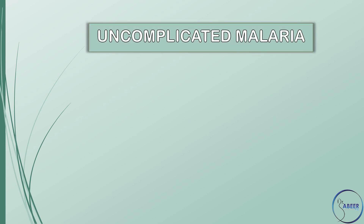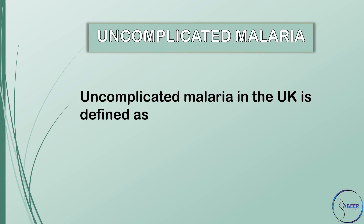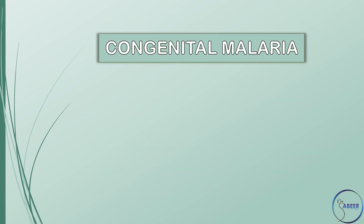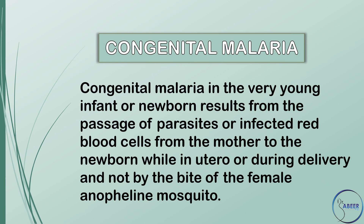Uncomplicated malaria in the UK is defined as fewer than 2% parasitized red blood cells in a woman with no signs of severity and no complicating features. Congenital malaria in the very young infant or newborn results from the passage of parasites or infected red blood cells from the mother to the newborn while in utero or during delivery, and not by the bite of the female anopheline mosquito.